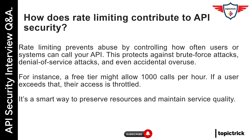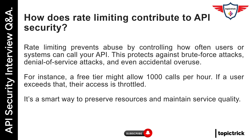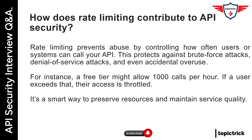How does rate limiting contribute to API security? Rate limiting prevents abuse by controlling how often users or systems can call your API. This protects against brute force attacks, denial-of-service attacks, and even accidental overuse. For instance, a free tier might allow 1,000 calls per hour. If a user exceeds that, their access is throttled. It's a smart way to preserve resources and maintain service quality.